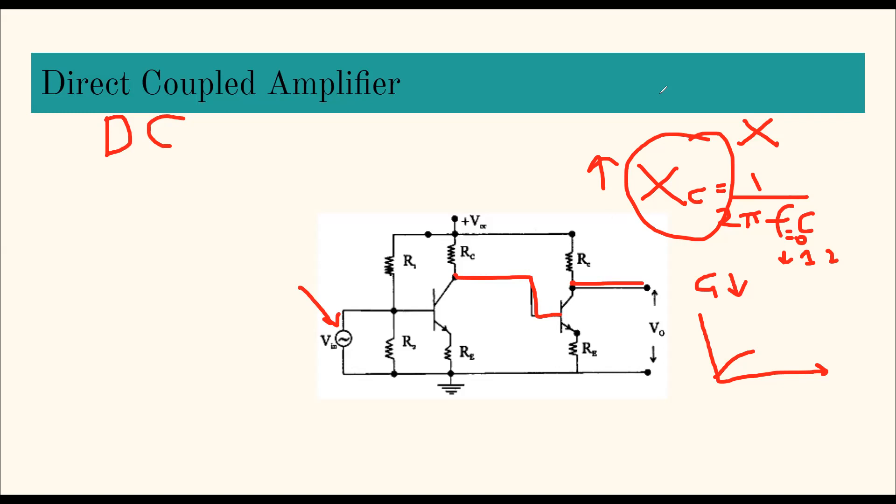The reactance portion goes away. That means low frequency signals can also be amplified by direct coupled amplifier. So how will my frequency response look like? This is frequency f and this is gain. Low frequency, starting from zero, f equals zero, my gain will be same. But at high frequency it will come down because beta gets affected at high frequencies of the transistor. But otherwise at low frequencies you are going to get this gain. This is one of the advantages of direct coupled amplifiers.